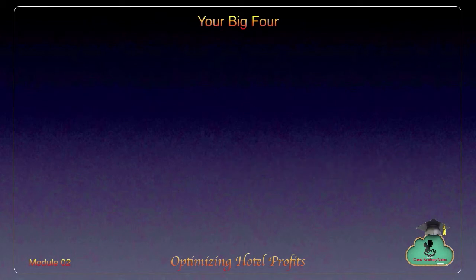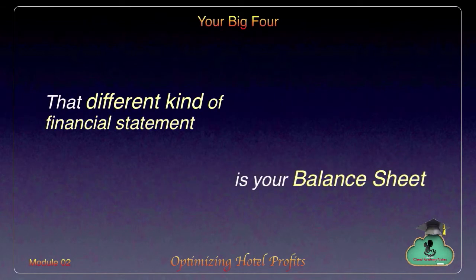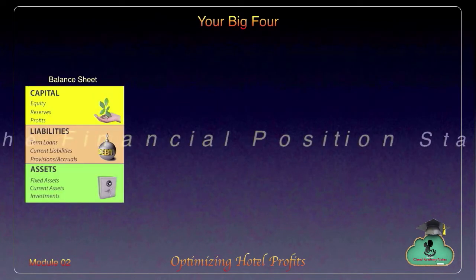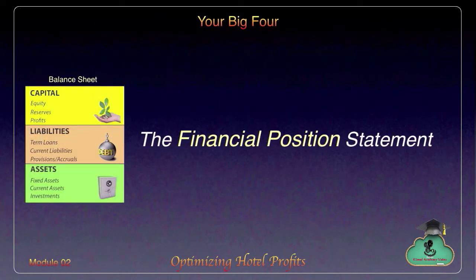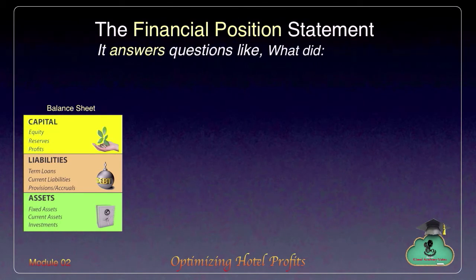That financial statement is your balance sheet — the second character in our story. While the profit and loss statement is called the performance statement, the balance sheet is called the financial position statement. It is a statement showing assets, liabilities, and capital of your hotel. Financial position tells you what the hotel is — what the hotel owns and what it owes.